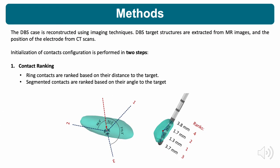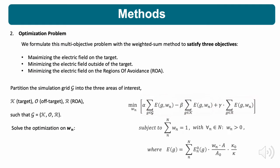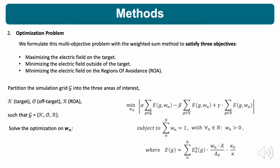First, we rank the contacts according to their distance and angle to the target. Then we use the highly ranked contacts to solve an optimization problem. We formulate our multi-objective optimization with the weighted sum method to satisfy three objectives.